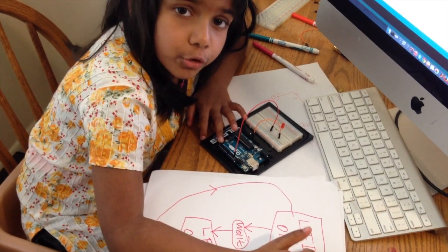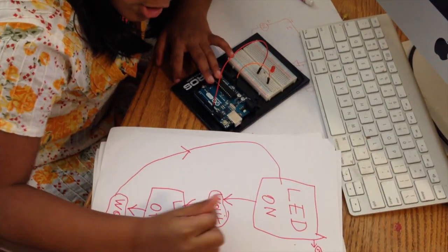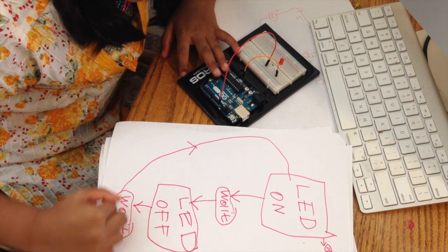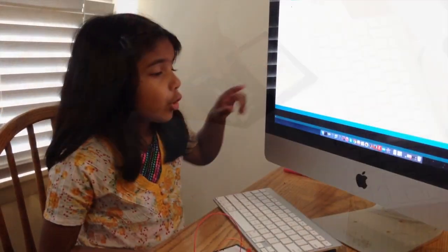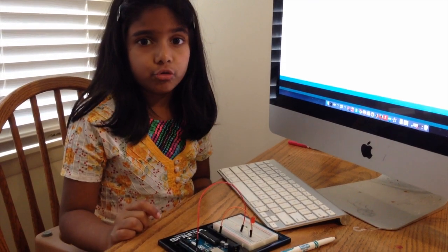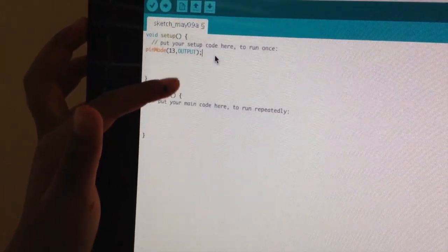The program will tell the LED to switch on, then it will wait for one second, then the LED will switch off, then it will wait for one second and it will repeat. In the program you have to tell the board what pin we're using, pin 13 to give the current out.